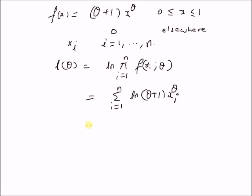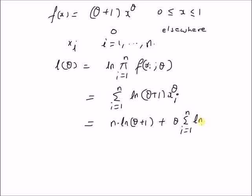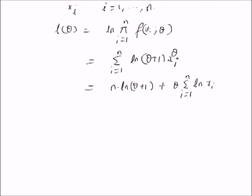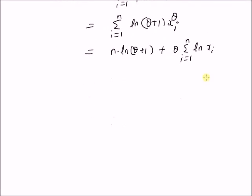This simplifies to n times log of theta plus 1, plus theta times the summation from i equal to 1 to n of the logarithm of x_i. This is the log likelihood function.